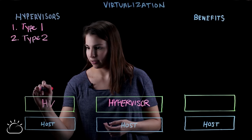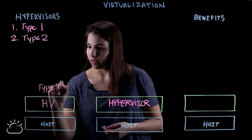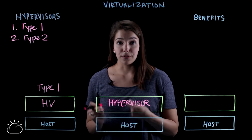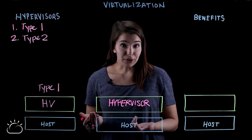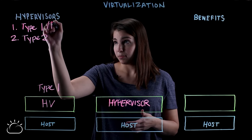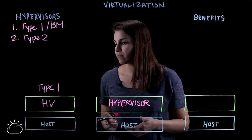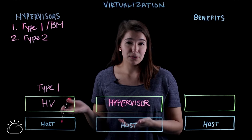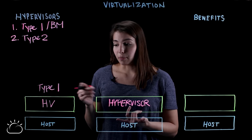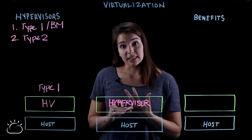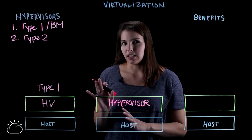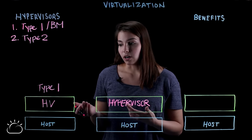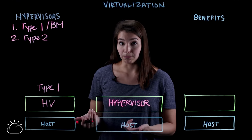A type 1 hypervisor is a hypervisor that is installed directly on top of the physical server. They're also called bare metal hypervisors. These are the most frequently used type of hypervisors — they're the most secure, they lower the latency, and these are the ones you'll see in the market the most. Some examples would be VMware ESXi, Microsoft Hyper-V, or even open source KVM.